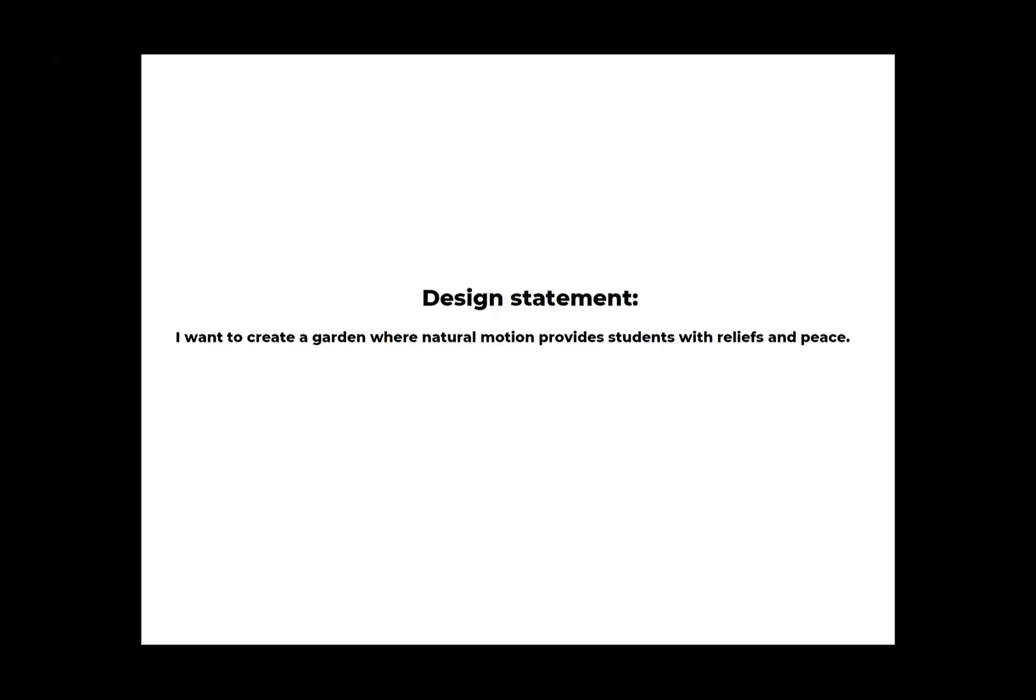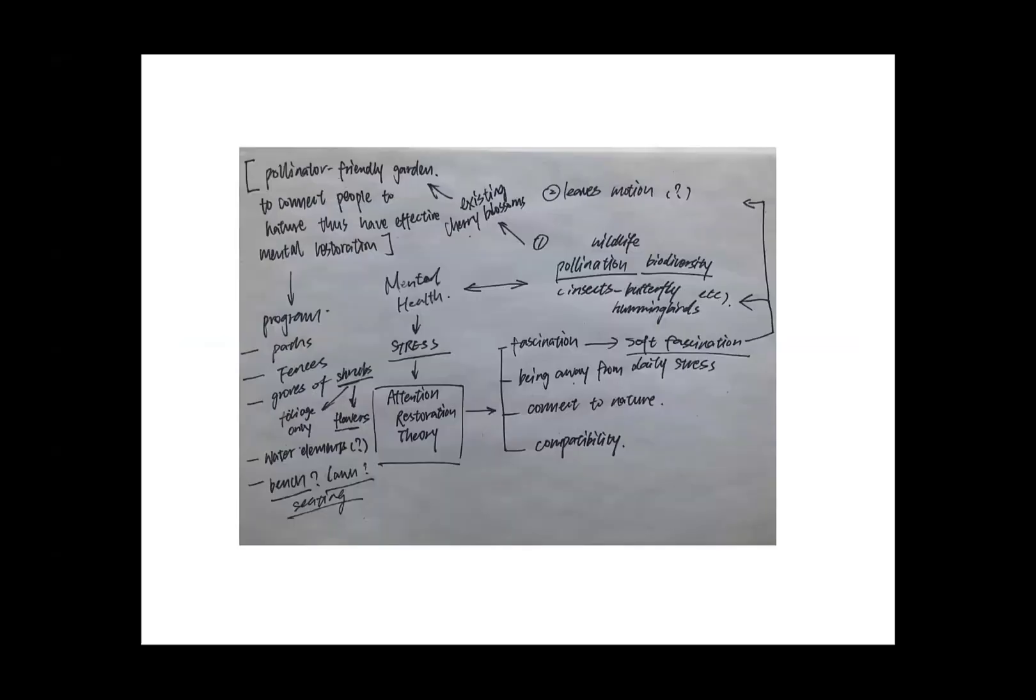I have three motions in mind. First is plant movement, which includes flowering flowers with wind in spring and leaves swaying with wind in summer. The second motion is wildlife movement, including butterflies, hummingbirds, and sparrows—the idea is to create a pollinator-friendly garden. The third motion is water features, basically crafting water from the rooftop of the community center to provide water sound in the garden.